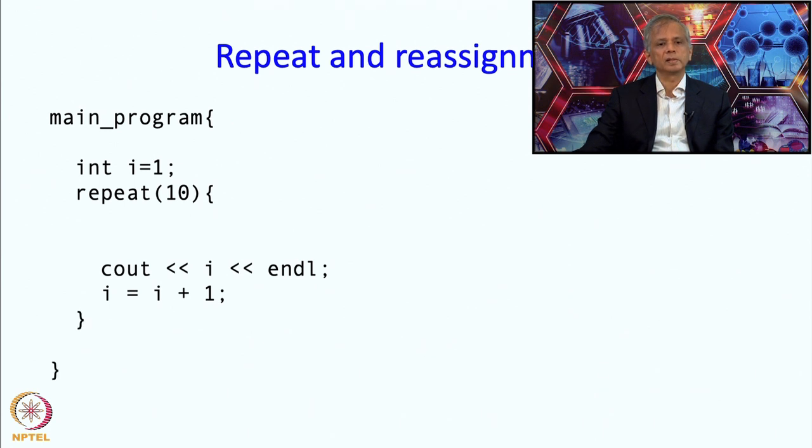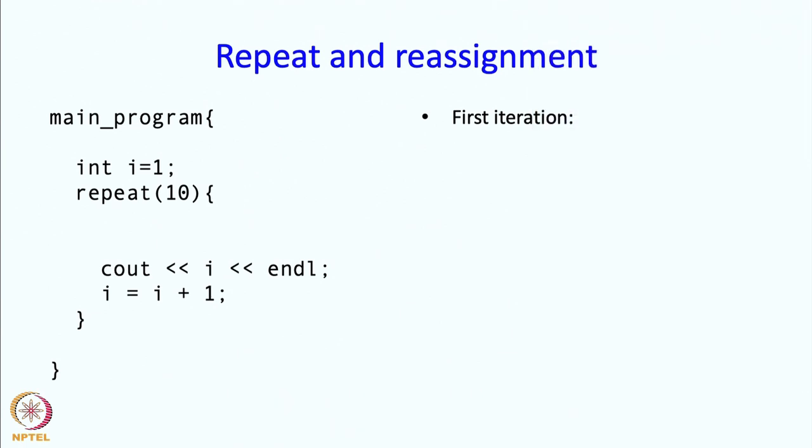So what happens when I execute this? So in the first iteration when the repeat statement body is entered, then i will have value 1. So because of that, 1 will get printed and the i equal to i plus 1 statement will change i to 2.